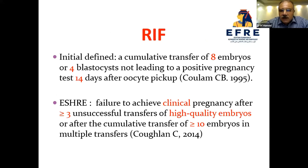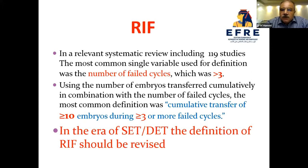Another definition proposed failure to achieve clinical pregnancy after three or more unsuccessful transfers of high-quality embryos, or after cumulative transfer of 10 or more embryos in multiple transfers. In a relevant systematic review including 119 studies, the most common single variable used was the number of failed cycles — more than three — and in combination, the most common definition was cumulative transfer of 10 or more embryos during three or more failed cycles.